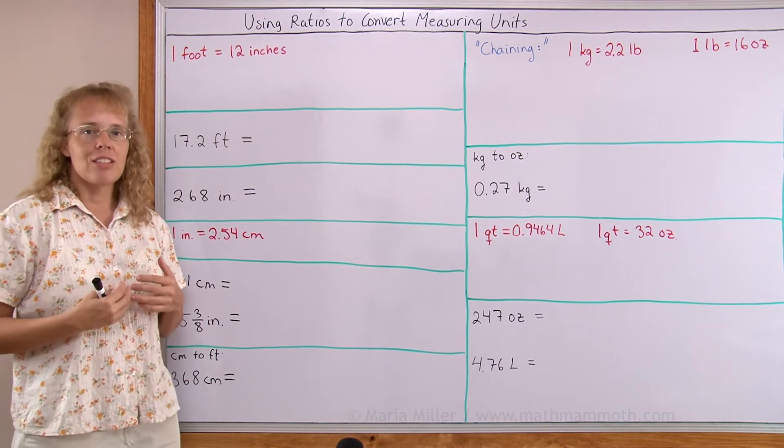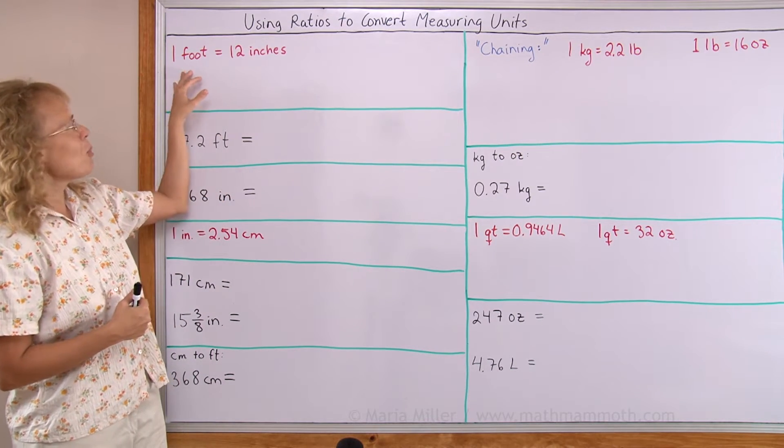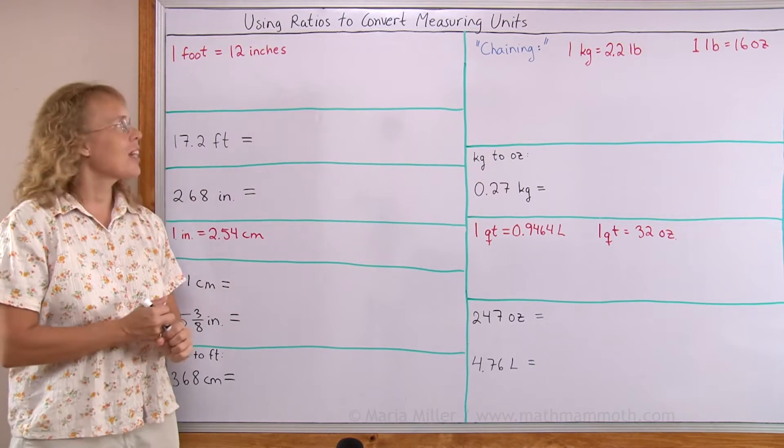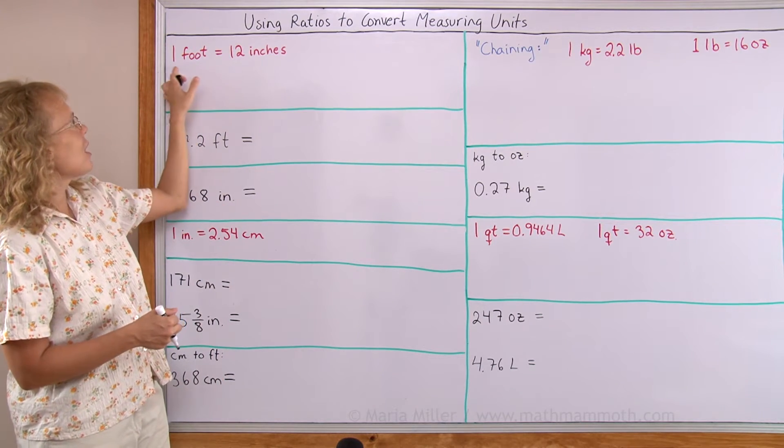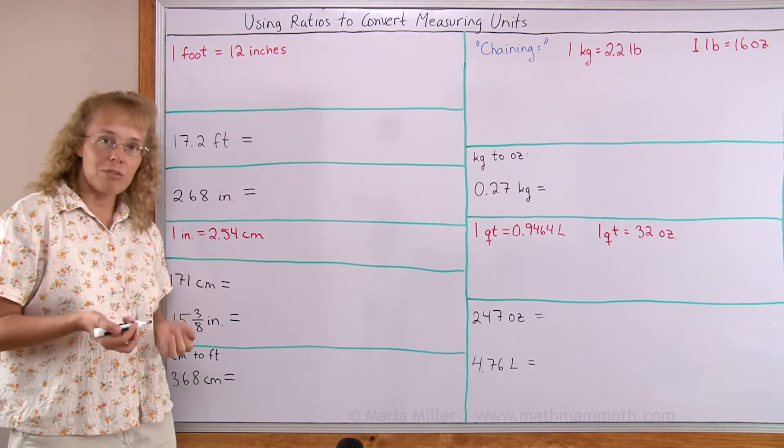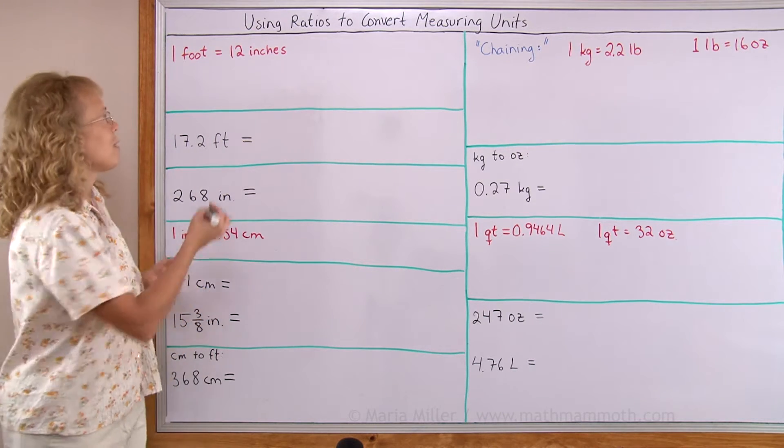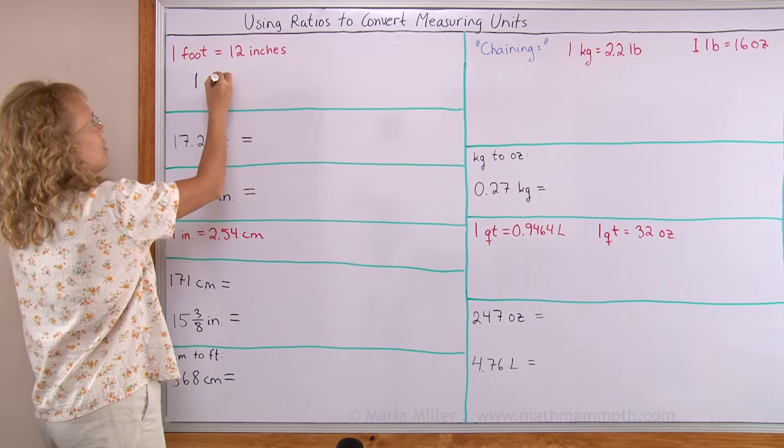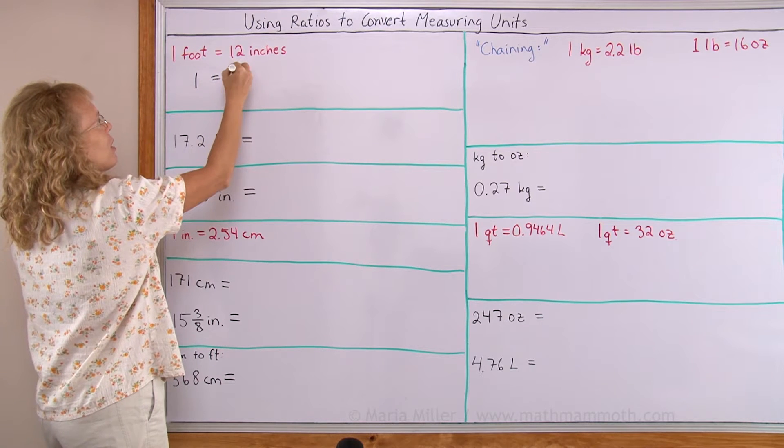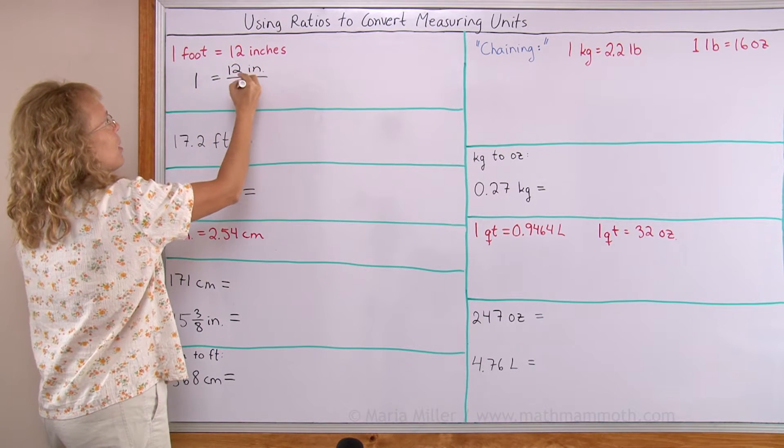Now I will treat it as an equation and divide both sides by one foot. So what happens if I divide this side by one foot? One foot divided by one foot is just one. And then over here I get 12 inches divided by one foot.